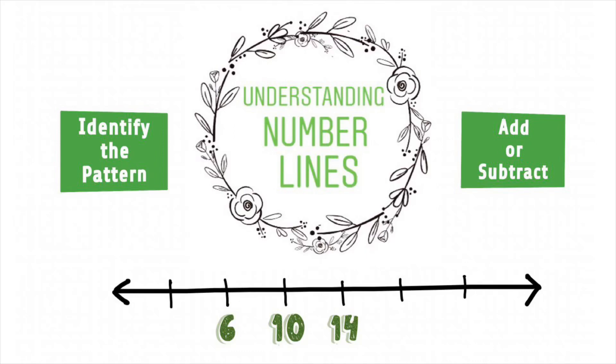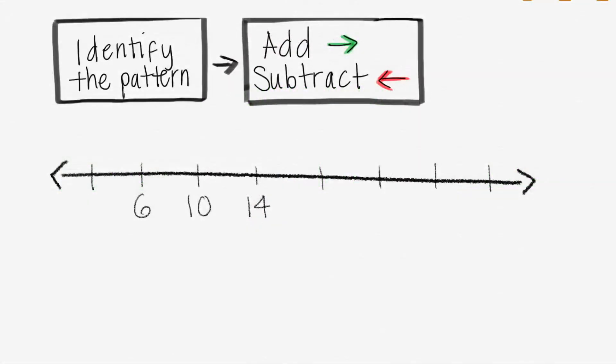Welcome back Math Grizz! Today we will learn how to understand number lines. Let's go ahead and identify the pattern. We're going to do that by finding two numbers that are next to each other. We notice that the 6 and the 10 are next door to each other.